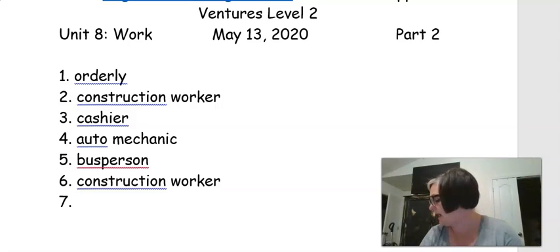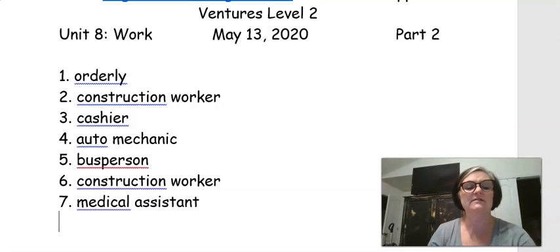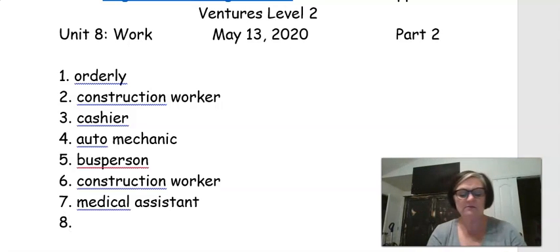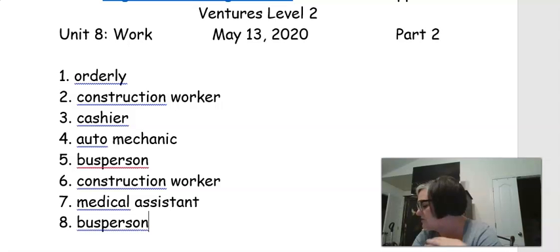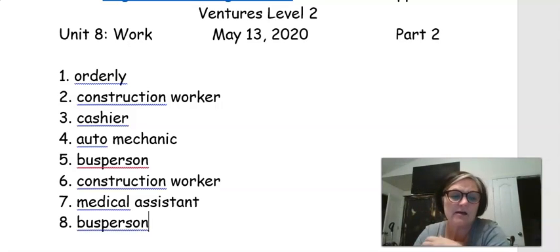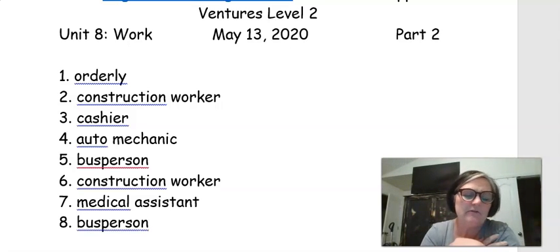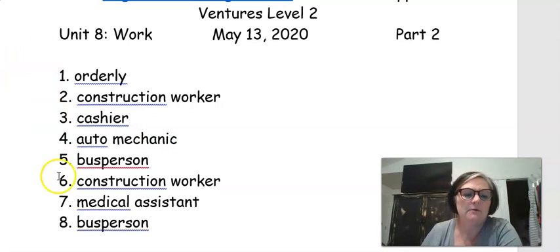Number seven, I have a medical assistant certificate. So that's the medical assistant. Remember, the orderly does not have a medical education. The medical assistant does. And number eight, I can work fast. That's again the bus person because in the ad, the last sentence of the bus person, they requested that they need to work fast. So that's your answers for part two of page 100. Go ahead and stop the video if you need to make any corrections, and then come back and we will start on page 101.